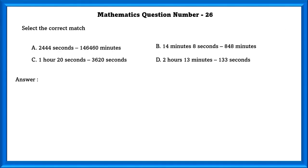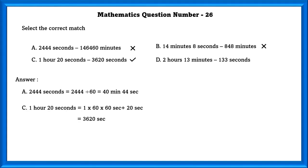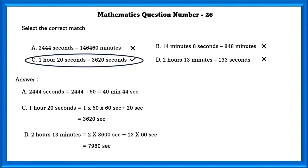Mathematics question number 26: Select the correct match. Option A: 2,444 seconds equals 1,46,460 minutes — this is wrong. Option B: 14 minutes 8 seconds equals 848 minutes — this is wrong. Option C: 1 hour 20 seconds equals 3,620 seconds — this is true. Option D: 2 hours 13 minutes equals 1,33 seconds — this is wrong. The correct match is C.